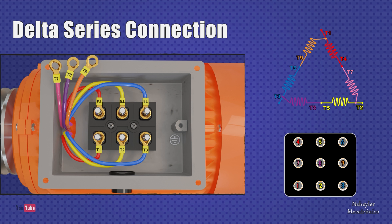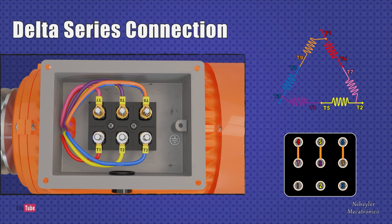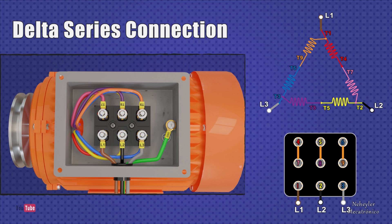In this type of connection, its terminals 1 to 9 are connected in the same way as in the series star type. Terminals T7 must be joined with T4, T8 with T5, and T9 with T6. Finally, it must be fed from Terminal 1 with line 1, Terminal 2 with line 2, and Terminal 3 with line 3.